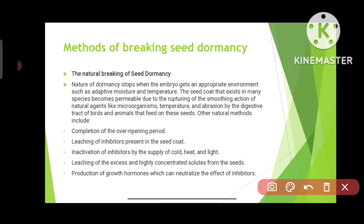Next are the methods of breaking seed dormancy. These can be natural or artificial. In natural methods, dormancy stops when the embryo gets an appropriate environment such as adequate moisture and temperature. Seed coats in many species become permeable due to rupturing by natural agents like microorganisms, temperature, and abrasion by the digestive tracts of birds and animals. Other natural methods include completion of the over-ripening period, leaching of inhibitors from the seed coat, inactivation of inhibitors by cold, heat or light, leaching of excess concentrated solutes, and production of growth hormones that neutralize inhibitors.